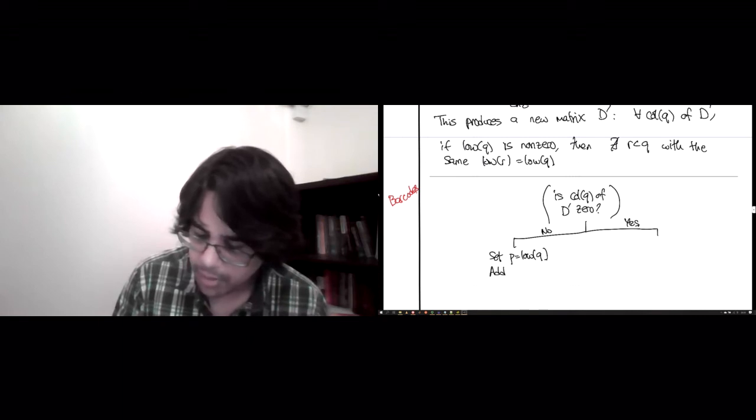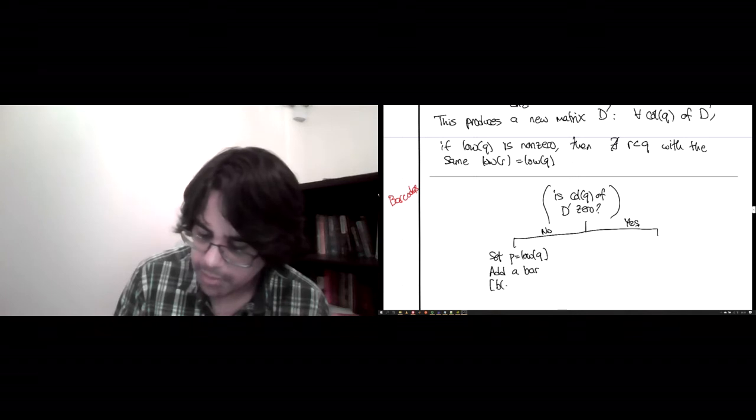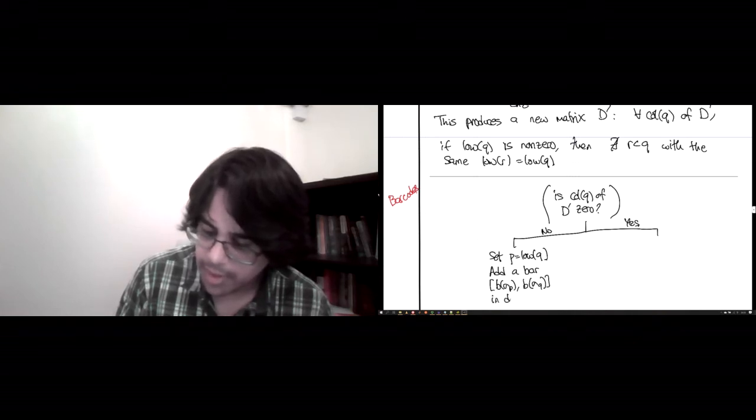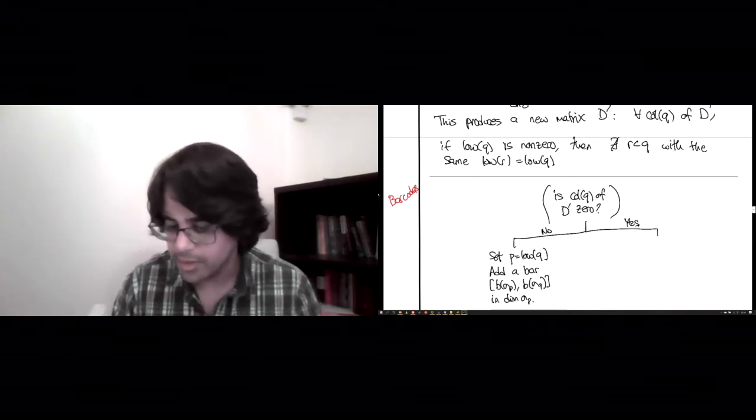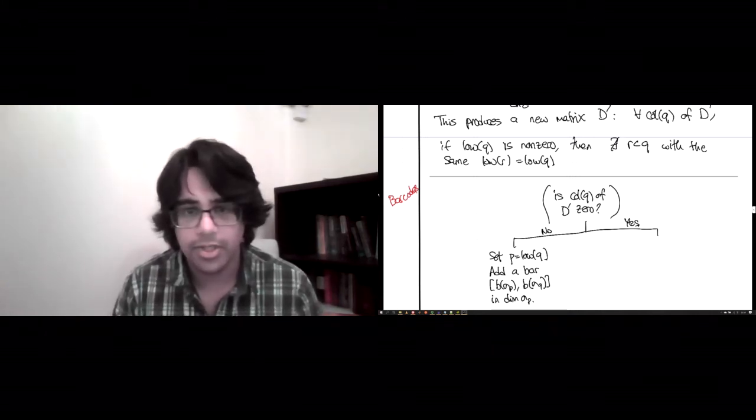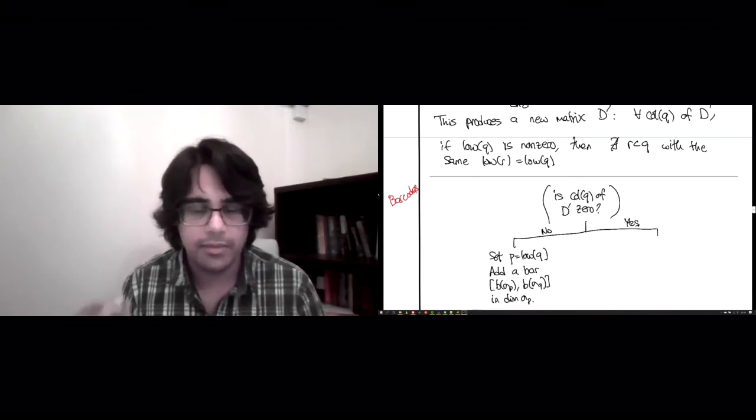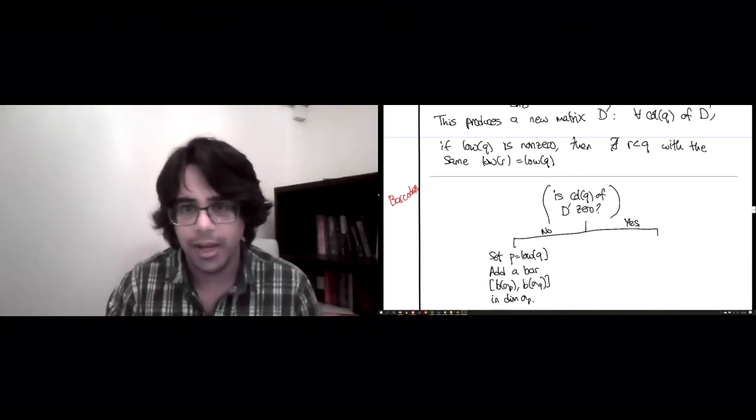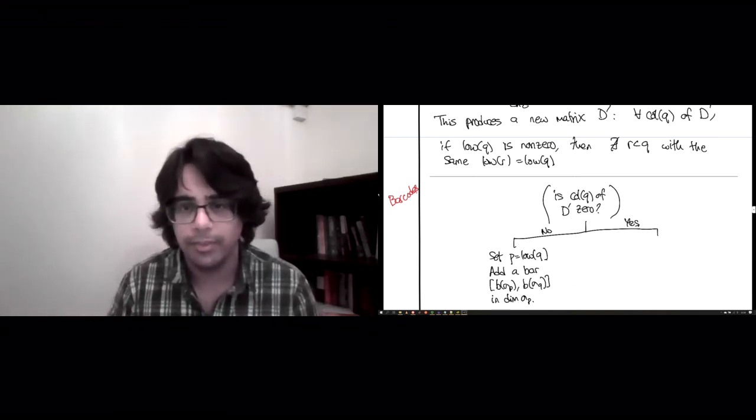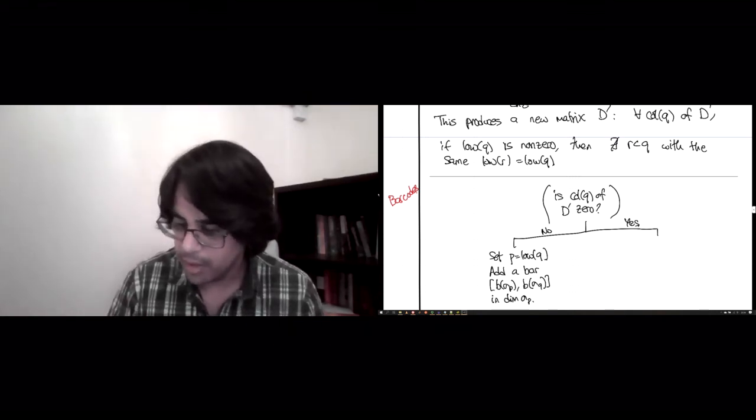you add a bar of the form whenever sigma P was born, and which this bar terminates whenever sigma Q was born in dimension of sigma P. So what's happening is that the insertion of sigma P into the filtration is creating a homology class of the same dimension as sigma P. And then sigma Q is putting the last nail in the coffin by making that cycle a boundary at some later stage of the filtration. Okay,